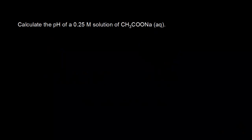Our goal is to find the pH of different salt solutions. We'll start with a solution of sodium acetate. In solution, we're going to have sodium ions, Na+, and acetate anions, CH3COO-.